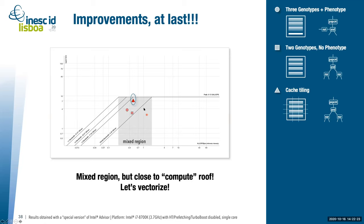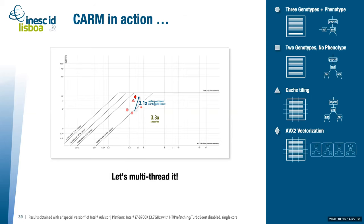Analyzing further, our point was now very close to the compute roof, suggesting we could vectorize to squeeze more performance. By vectorizing, we got 3.5 times improvement over the first version, with more than 3 times speedup. A limitation was that the architecture we tested only supports scalar POPCNT. We expect significantly better results on Ice Lake X, which supports AVX-512 POPCNT.